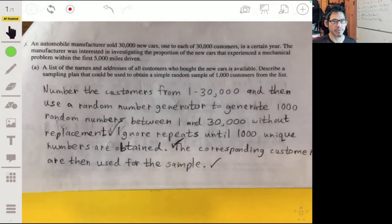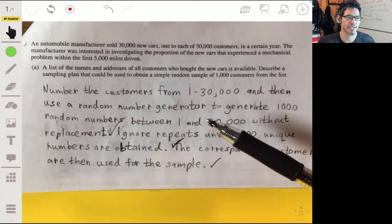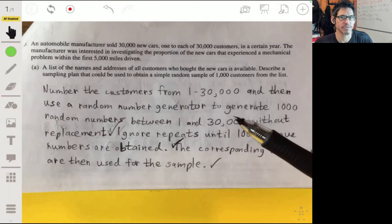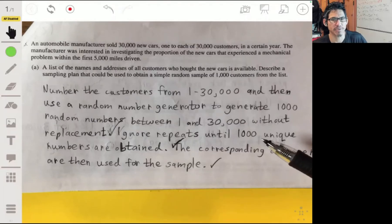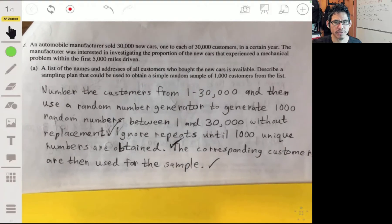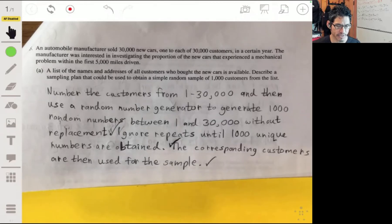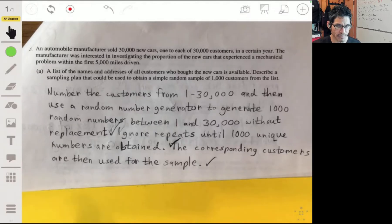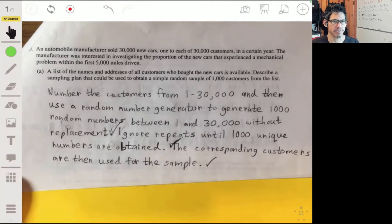Now the key thing that you want to make sure you address is that you have to ignore repeats. Like a repeat is if you have the same number appear twice or more than once—it's like picking the same customer again and you can't do that. So you have to keep on moving on until you get a thousand different ones, or unique we say. Then those 1,000 unique numbers are going to be matched up with the customers, and then those customers are going to be the ones that you use for the sample. So three key points here: make sure you mention that you're not going to use replacements, ignore repeats, and that these numbers are going to go to the customers, not the cars.